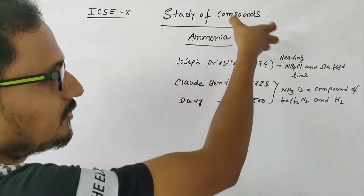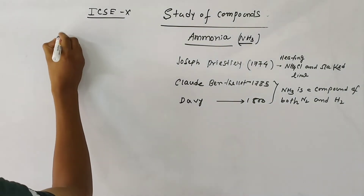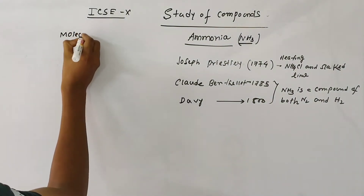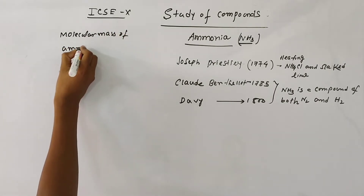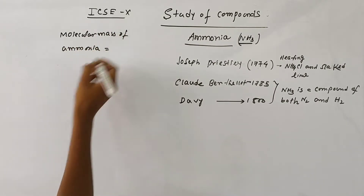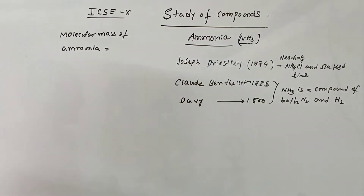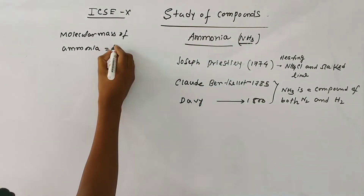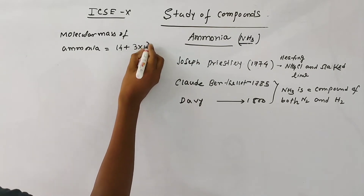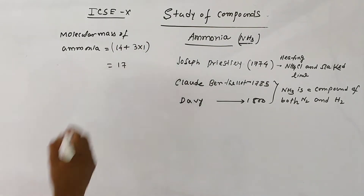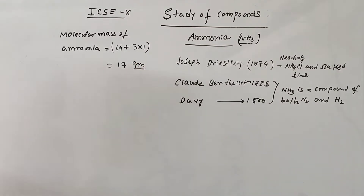The molecular formula of ammonia is NH3. Now, how do we calculate the molecular mass? We join the atomic masses of individual atoms — nitrogen and hydrogen. The atomic mass of nitrogen is 14, and each hydrogen has atomic mass 1, so 3 into 1 is 3. Therefore, the molecular mass of ammonia is 14 + 3 = 17.